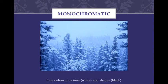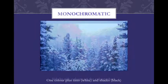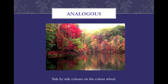Colors can be monochromatic — one color plus tints of white and shades of black. In this example we have white and blue. Or they can be analogous, where they are side-by-side colors on the color wheel, like the oranges next to the red and yellow next to the orange.